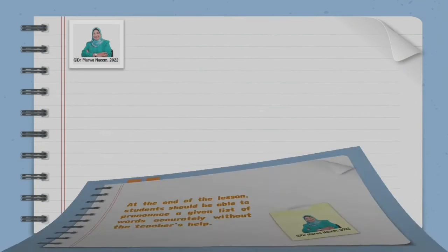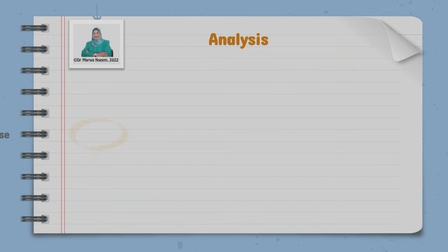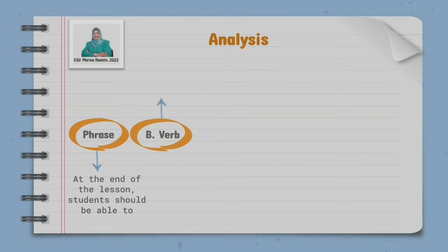All right, let's analyze this objective. The common phrase: at the end of the lesson, students should be able to. Then the second component, the behavioral verb. The behavioral verb naturally comes after to, it's pronounce. Is that behavioral? Yes, because I can ask a question. I can ask a student to pronounce some word. So this is a behavioral verb. Then we have the content to be taught, which is a given list of words.